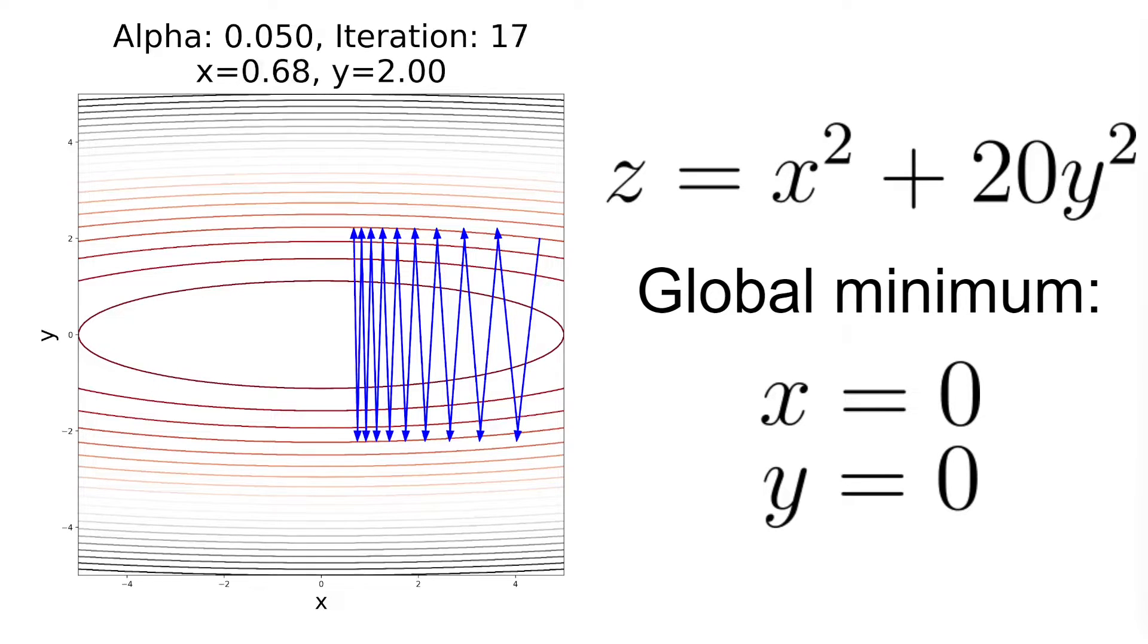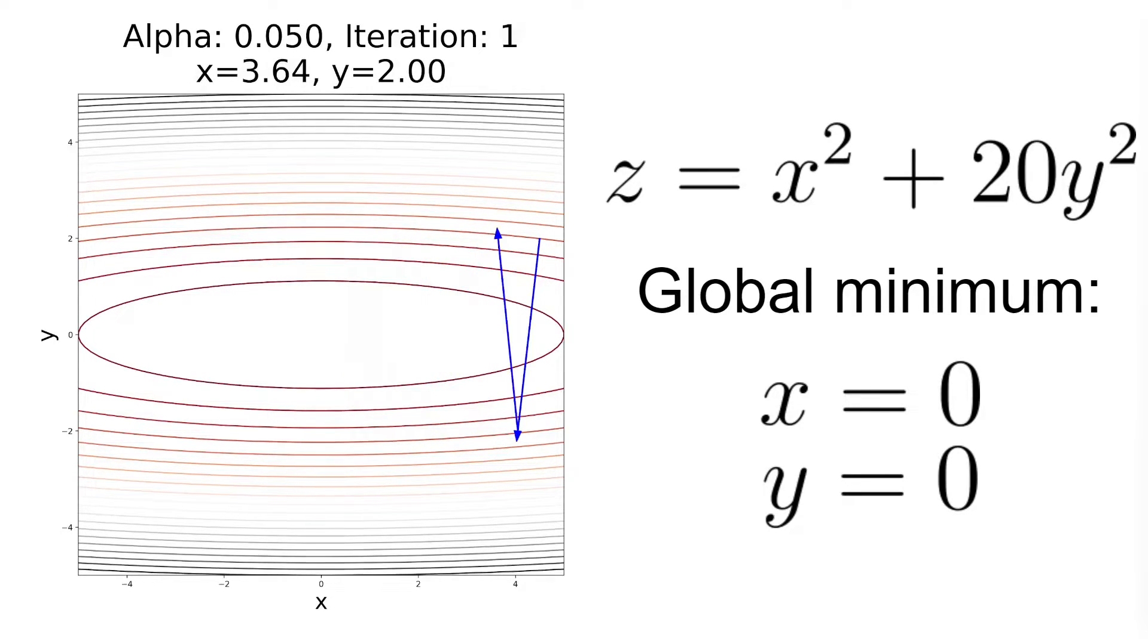To make the algorithm converge, we have to decrease the learning alpha even further, let's say to 0.01. Now this learning rate is tuned for the y-dimension and as you can see the gradient descent quickly converges to the global minimum on the y-axis.